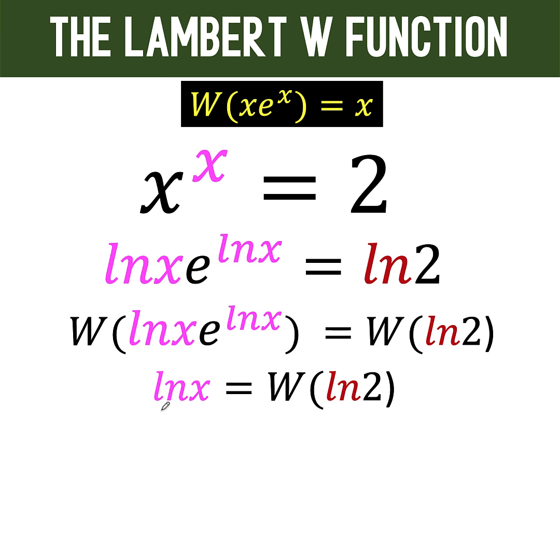Since we are solving for x, we'll perform the inverse operation of taking the natural logarithm, which is raising to the base e. So we take the exponentials of both sides. And we now have this form. Now, e raised to ln x is just x. And we copy the right side.